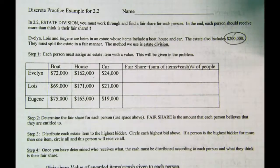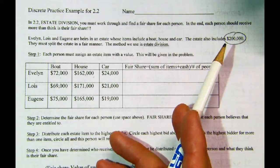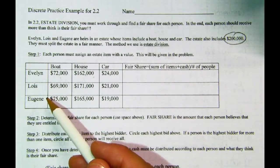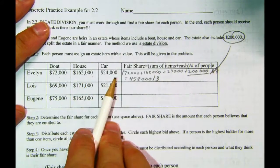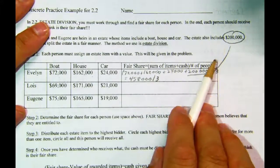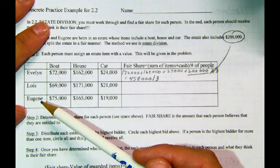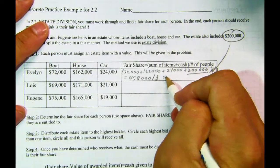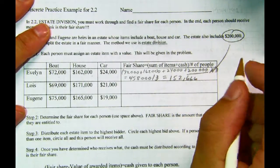Once you find your value, you figure out what your fair share is. For Evelyn, she takes her bid on all items plus the $200,000. She doesn't think she should get all of that, but she thinks she should get a third of it. So we take $72,000, add $162,000, and $24,000, and the cash which is $200,000, then divide it all by three — because there are three people. If there were four people, we'd divide by four. Evelyn's fair share comes out to $152,666.67.